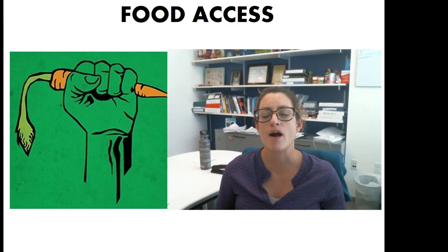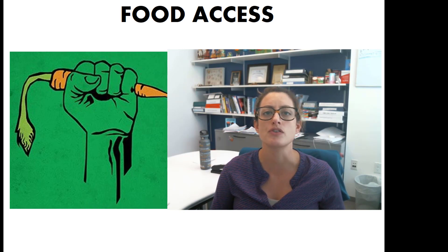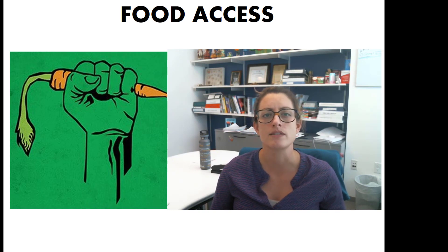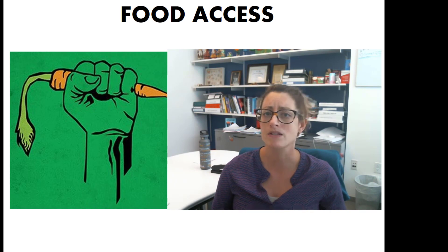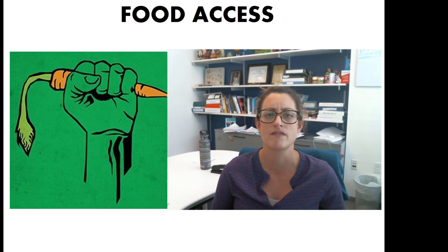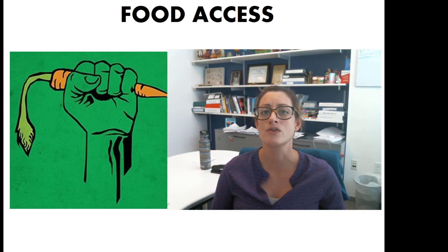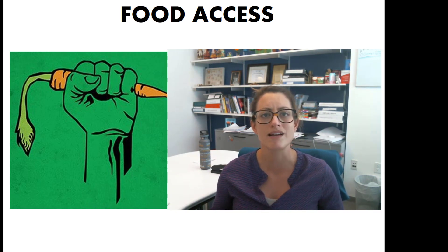Hi everybody, welcome back. For our first set of slides we're really going to be talking about the issue of food access, focusing more so on food deserts. One thing I want you to start thinking about is why is it some people have access to the capability of buying, storing, and transporting fresh fruits, vegetables, meats, cheeses, and other foods that require special types of storage? Also why is it that some people can't afford fresh fruits and vegetable options? Are there certain foods that are more or less expensive? How nutrient-dense are those foods? Just something to think about while we're going through this set of slides.